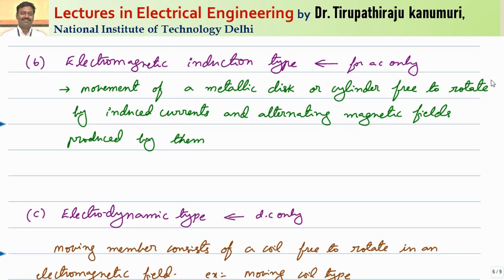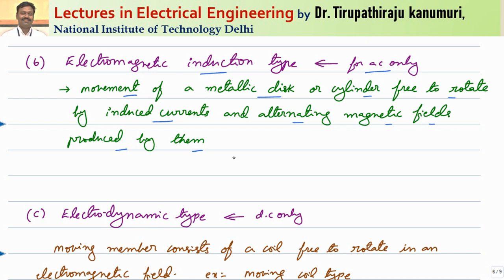The next one is electromagnetic induction type. As the name suggests, it is based on the induction principle, which can only occur with alternating current or alternating flux. That is why this can be used only for AC. In this case, the movement of a metallic disc or cylinder, free to rotate, is caused by induced currents and an alternating magnetic field — similar to your energy meter used in households.